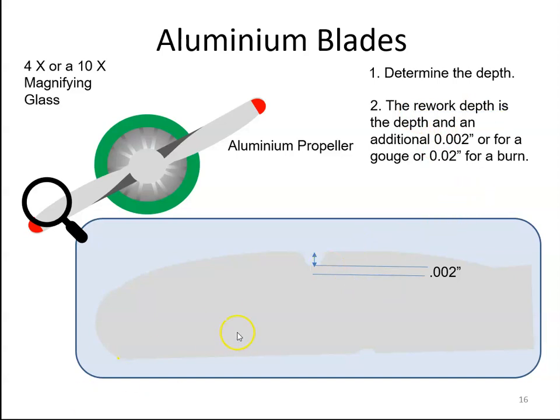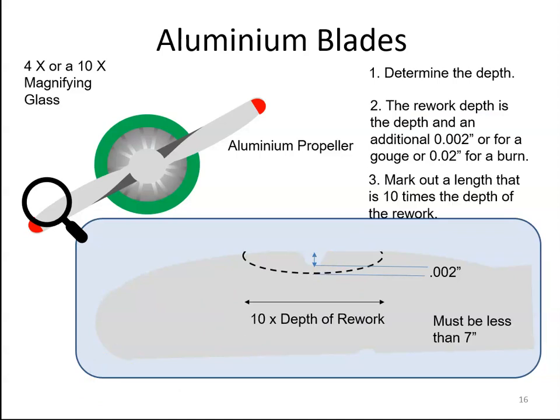Once we've established that, we then mark out an area ten times the rework depth. And that area, as long as it is less than seven inches, is then removed by filing. So if ten times the rework depth was 7.1 inches, we can't do it. If it was 6.9, then we can actually file away and take away all this metal.